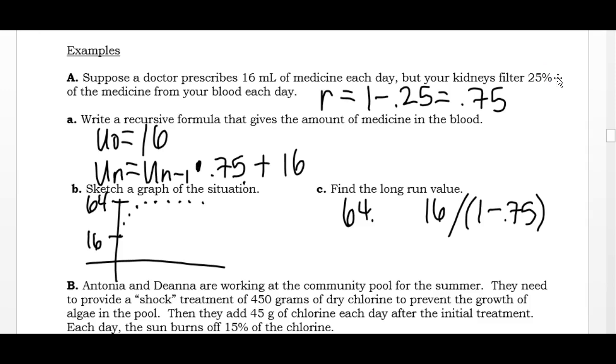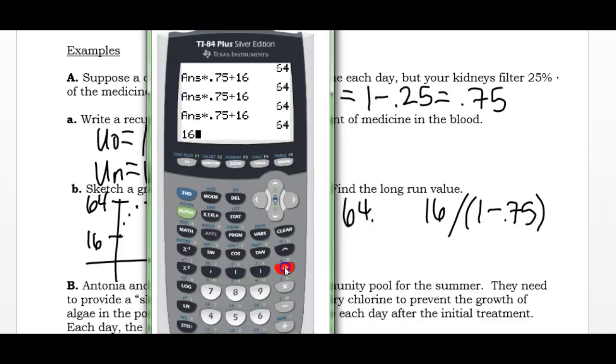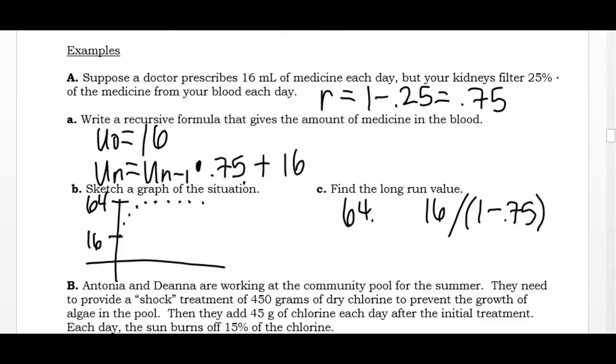But if I do this, 16 divided by 1 minus 0.75, I get the same long-run value that I found, 64, by just hitting enter a whole bunch of times.